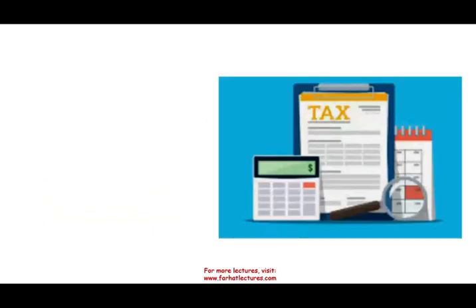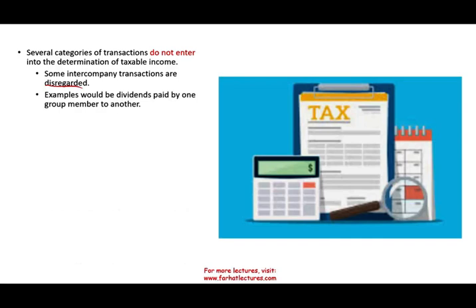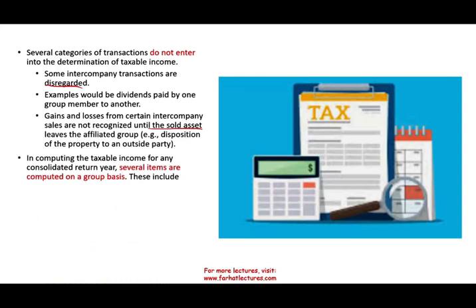Let's take a look at how we compute taxable income. There are several categories that do not enter into the determination of taxable income. For example, intercompany transactions are disregarded — profit and losses are disregarded, dividends paid by one group member to another are eliminated, and gains and losses from certain intercompany sales are not recognized until the asset is sold to a third party. In computing taxable income for a consolidated return, several items are computed on a group basis. On a CPA exam, questions about what's included and what's not are common.